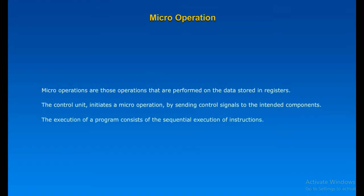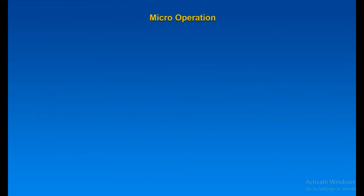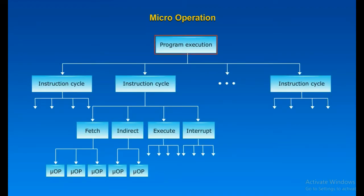To summarize, the execution of a program consists of the sequential execution of instructions. Each instruction is executed during an instruction cycle made up of shorter sub-cycles — for example, Fetch, which involves a few micro-operations; Indirect address calculation, which again involves a few micro-operations; and similarly, operand fetch, execute, and interrupt.